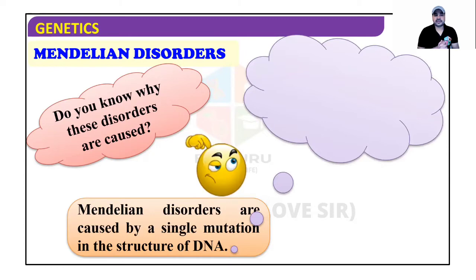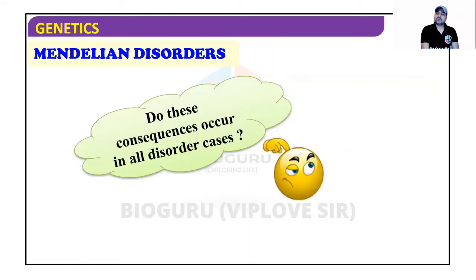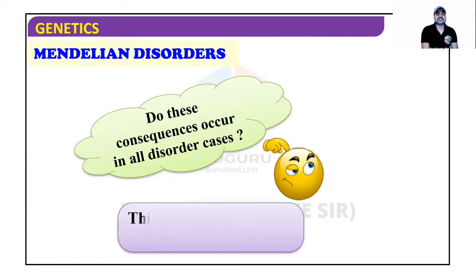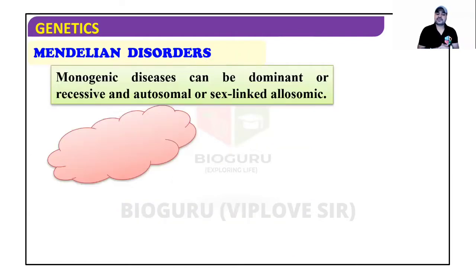These disorders are caused by a single mutation in the structure of DNA. This mutation causes a single basic defect with pathological consequences — a defect in a single gene is expressed in the phenotype. Monogenic diseases can be dominant or recessive, and autosomal or sex-linked.